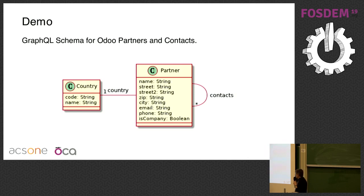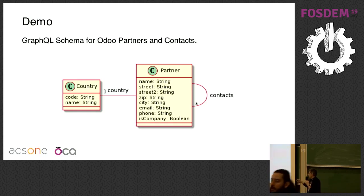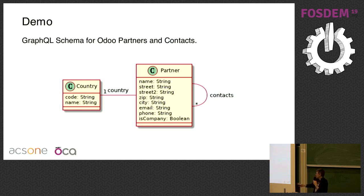For the sake of the demonstration, we'll use a simple schema. We'll expose Odoo partners, which are basically companies and contacts with their name, address, email, phone, and a flag saying if it's a company or a simple contact. In the address block there's a country field which points to a country type with a code and name. Companies have contacts and contacts have a parent company. So it's a simple but interesting data model for a demo.